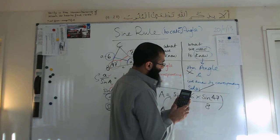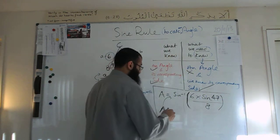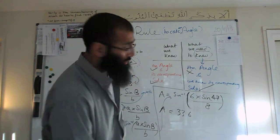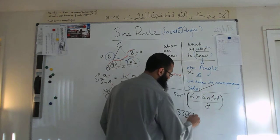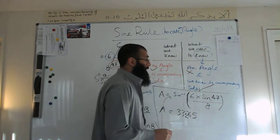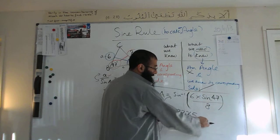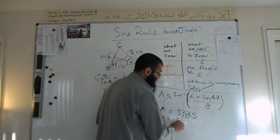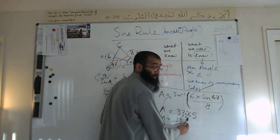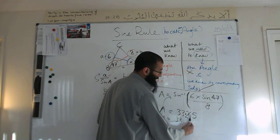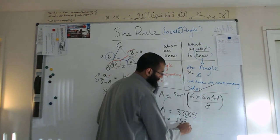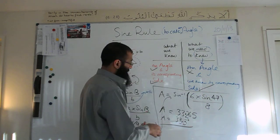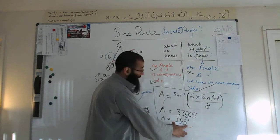And we get an answer of 33.265. Now, this is an angle — we don't need that many decimal places. Rounding to one decimal place: look at the second decimal, which is two. If it's five or more, add one. Wait — that two becomes three? Let me re-check: 33.265 rounded to one decimal place gives us 33.3 degrees. So A equals 33.3 degrees.